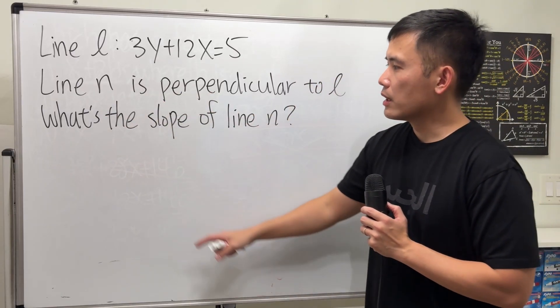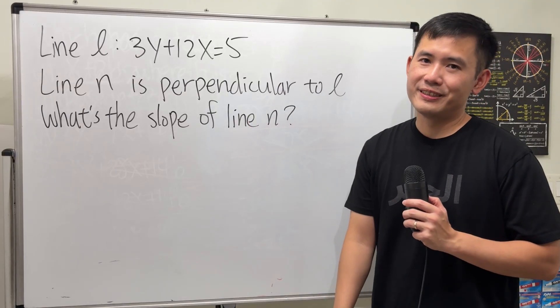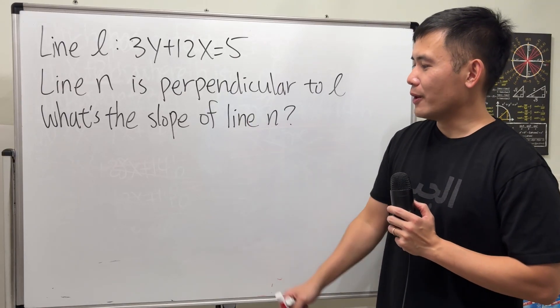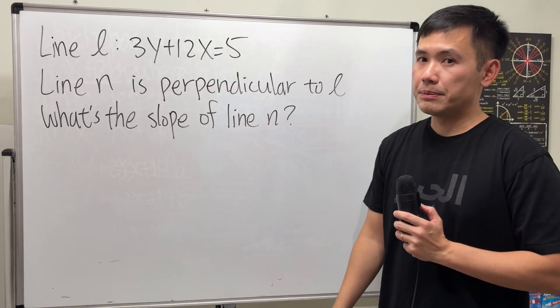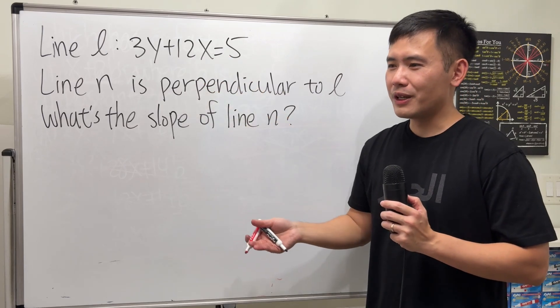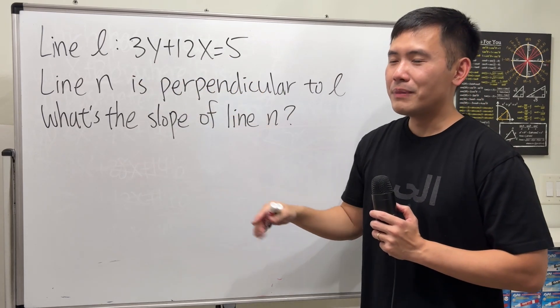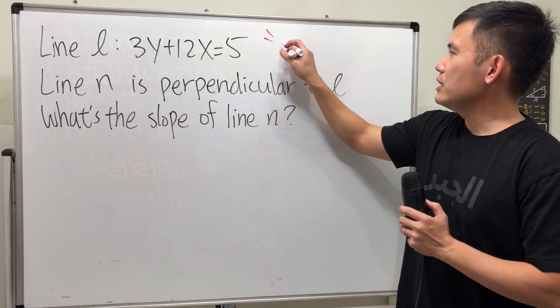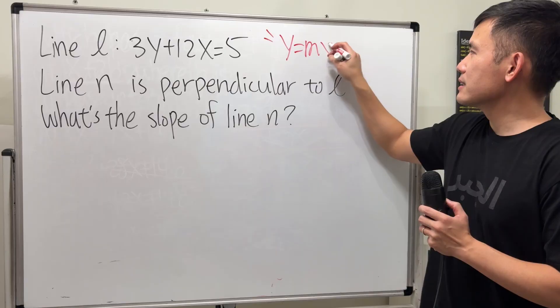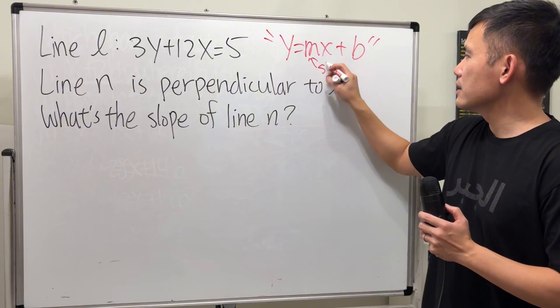it says line N is perpendicular to the line L. The goal is to find out the slope of the line N. So, how do we do it? Well, here's the deal. This equation is not in the y equals mx plus b form. You can also use the formula for finding the slope for the standard form, but usually we like to do it with y equals mx plus b. Imagine if you have y equals mx plus b, then this right here is the slope.